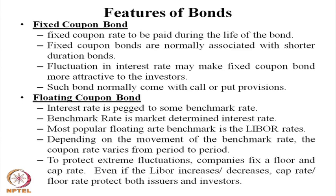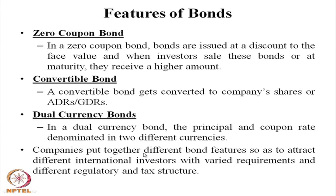At present, almost 90 percent of bonds are being issued on a floating coupon basis rather than a fixed coupon basis. There are also many different kinds of bonds available — zero coupon bonds, convertible bonds, and dual currency bonds — associated with different bond features.